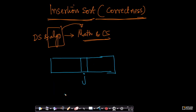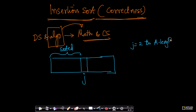The idea here is: I take the jth element, and the rest of the elements before it are already sorted. When I pick up the jth element, remember j goes from 2 to A.length — so j initially will be at 2, and at the end it will be at A.length.